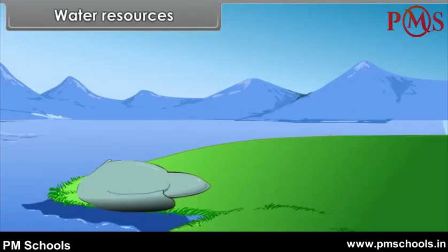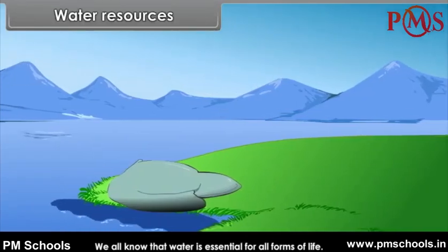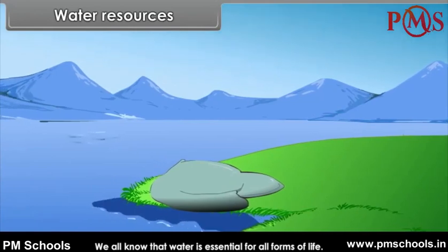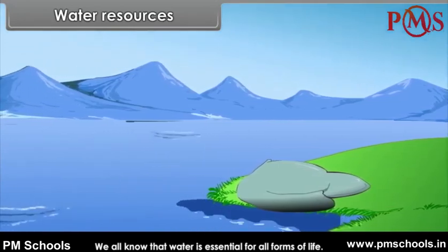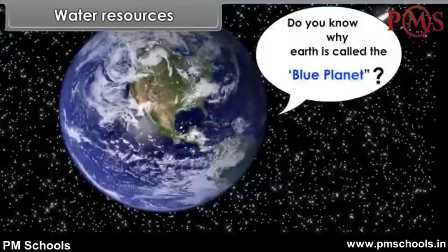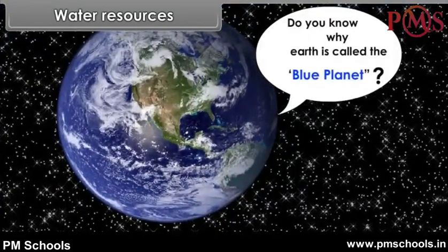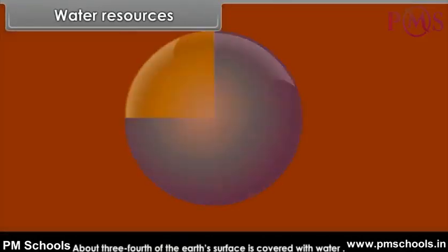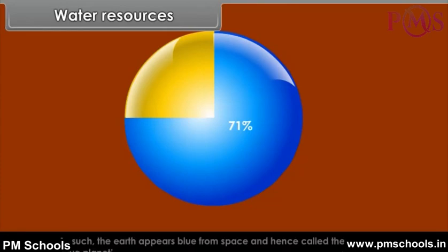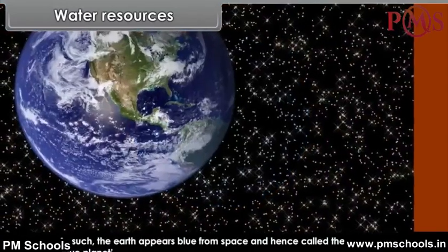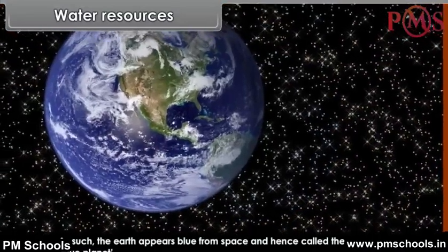Water Resources. We all know that water is essential for all forms of life. Do you know why Earth is called the blue planet? About three-fourths, or 71%, of the Earth's surface is covered with water. As such, the Earth appears blue from space, and hence it is called the blue planet.